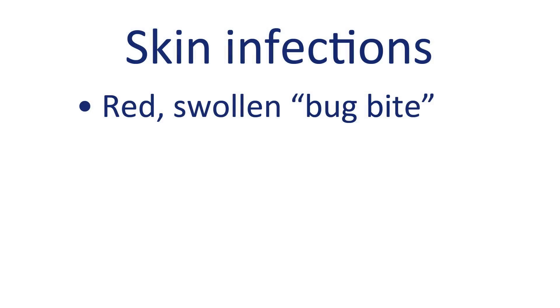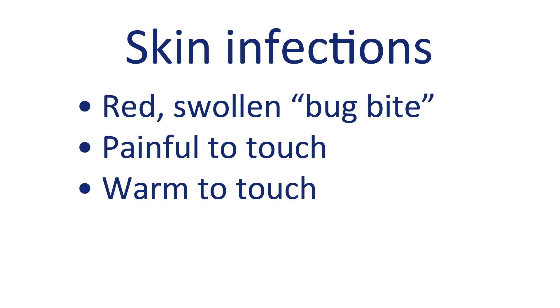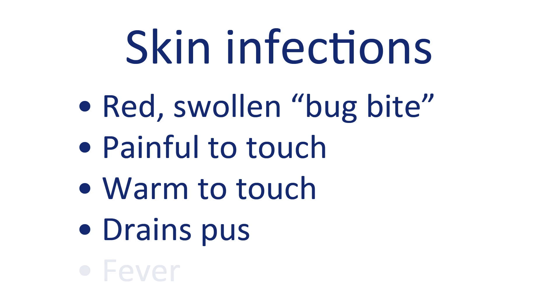Symptoms of a staph infection or an MRSA infection are typically in the skin and soft tissue. It can start with what looks like a spider bite, but unless you actually see the spider bite you, you never want to assume that's what's going on with your skin. It can be an area that looks like a bug bite or a wound, and then it will get more red and more swollen. It's often painful to the touch and warm to the touch, and it may start draining pus or other fluids, and you may have a fever as well with the skin infections.